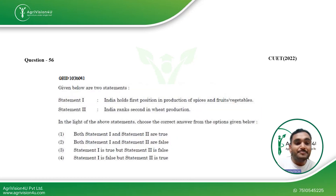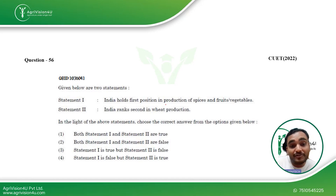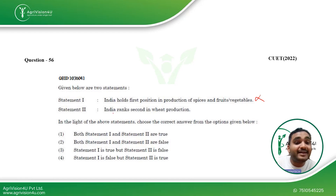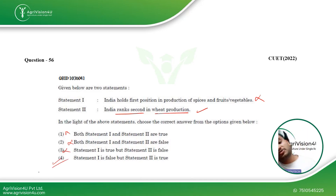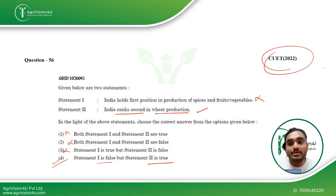The next question is application-based — if you are well aware about current affairs, you will be able to answer it. Does India hold first position in production of spices and fruits and vegetables? No. Does India rank second in wheat production? Yes, India ranked second in wheat production. So the right answer is option four — statement one is false and statement two is true. All these questions were asked in CUET 2022.